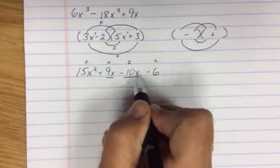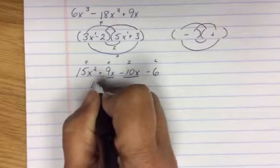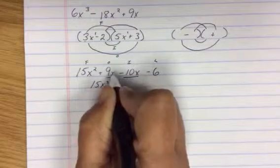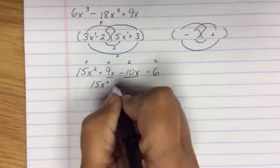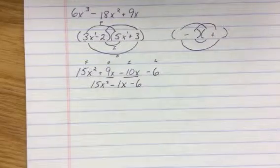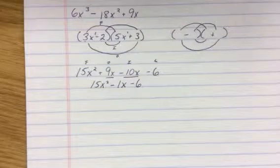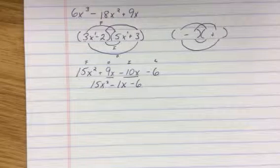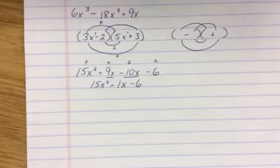It will always be the most innermost. 9 minus 10 gives me negative 1x. And again, we typically do not write the one, but I'm doing it now just for demonstration. FOIL.